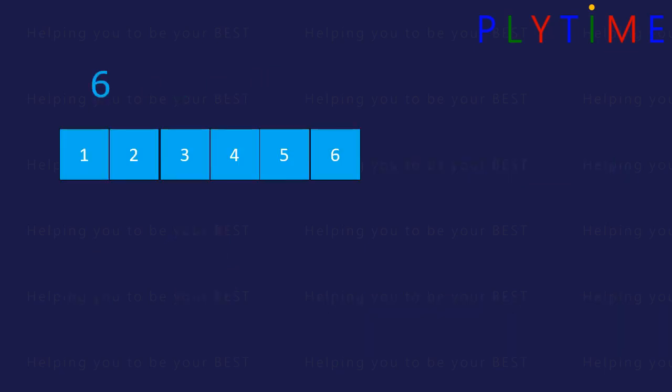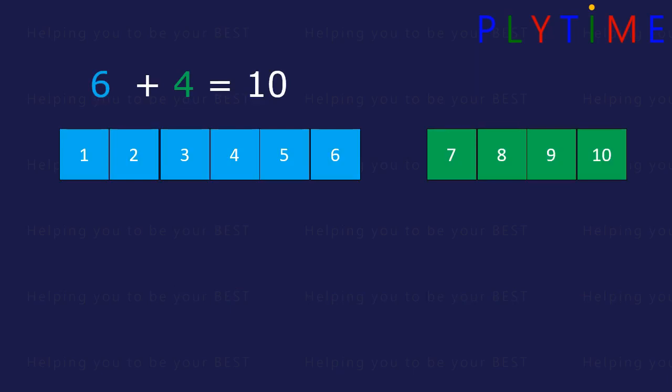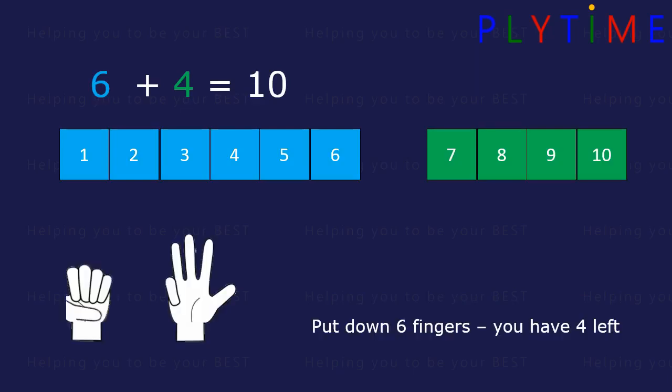6 add 4 is 10. Put down 6 fingers. You still have 4 left up. 6 and 4 is 10.